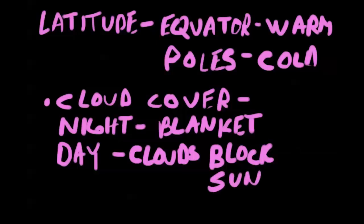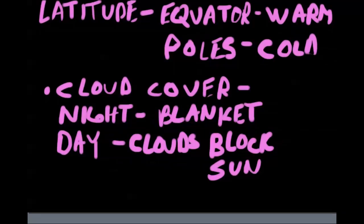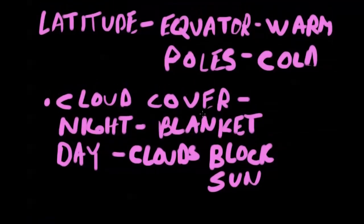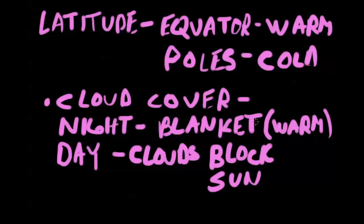When the clouds block the sun, it does get cooler out. At night, as the earth reradiates its energy, this blanket of clouds actually keeps the atmosphere warmer. We'll see this a lot during the winter — the insulating properties of clouds at night. So during the night, if there are clouds, it acts as a blanket and keeps the air warmer. During the day, clouds block the sun and it keeps the earth's surface cooler.